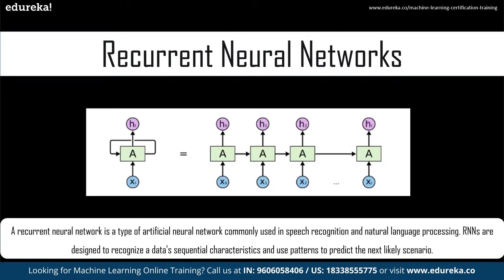What makes RNN capable of handling sequential data? The RNN model makes use of something called a state — a temporary memory that stores previous data. This is the general architecture of a recurrent neural network. Let me move to the canvas to show you how it works internally.